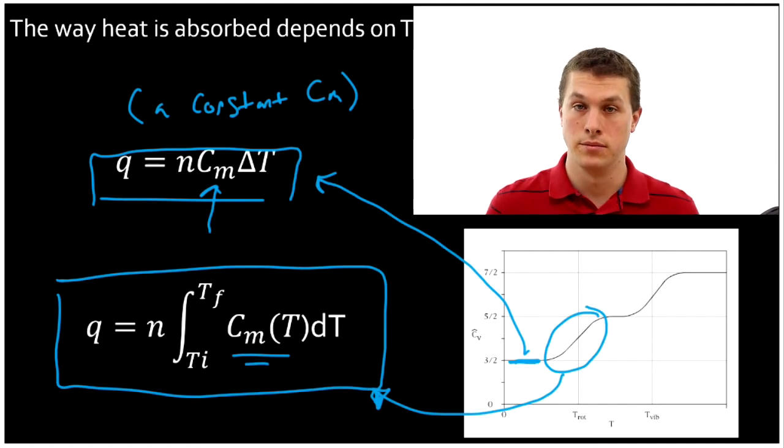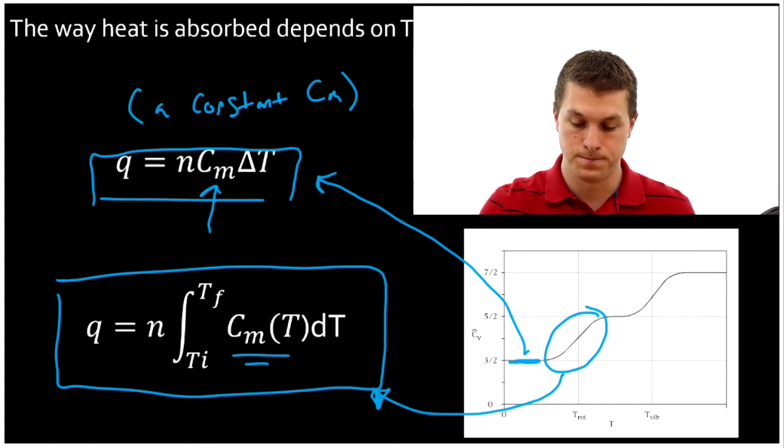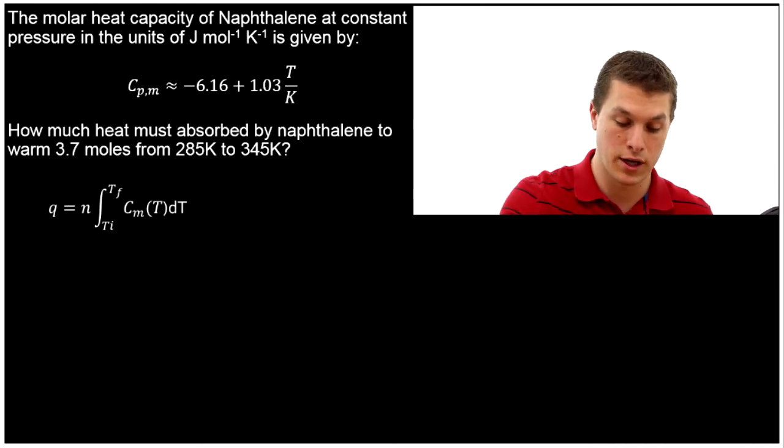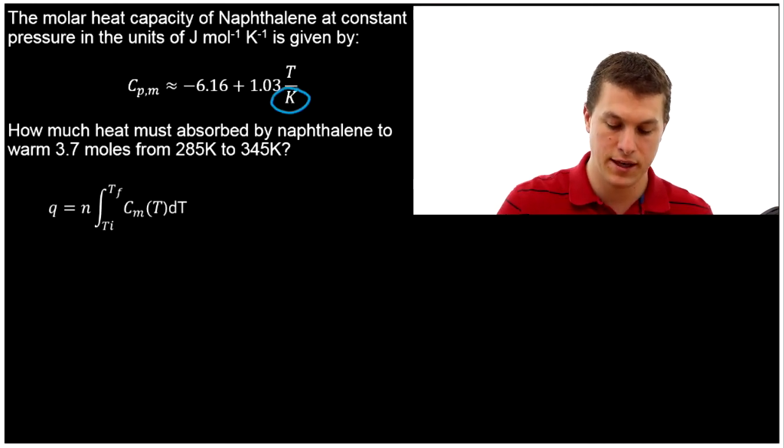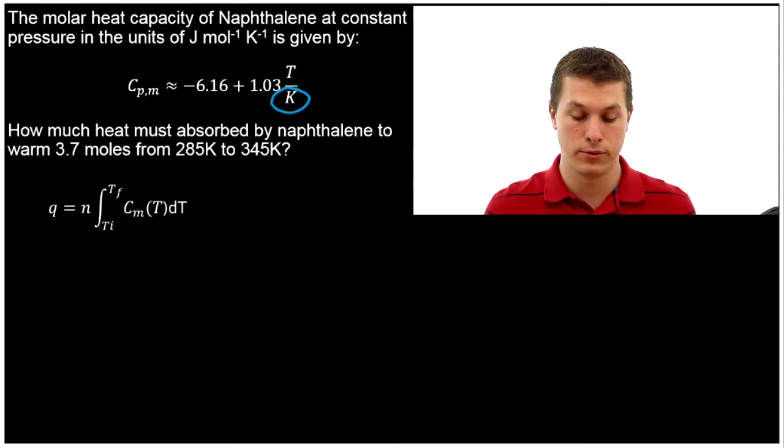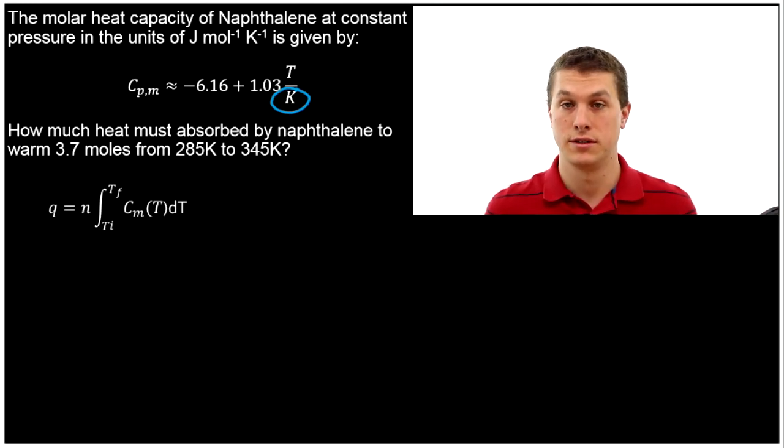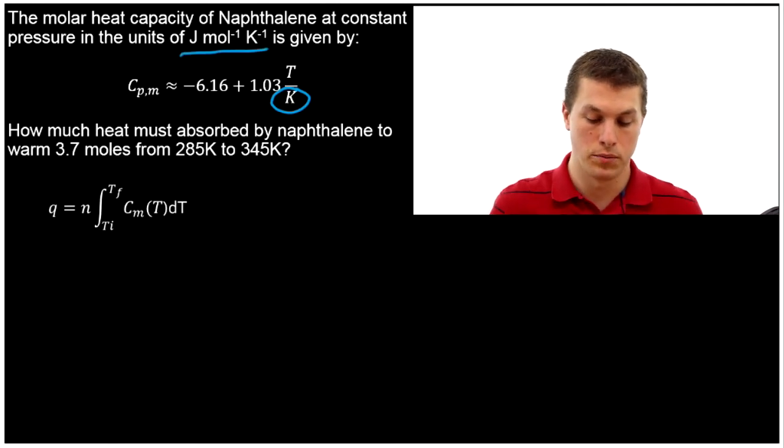Let's take a look at a problem that uses calculus to solve heat capacity. This problem says the molar heat capacity of naphthalene (that's two benzene rings fused together) at constant pressure, in the units of joules per mole per kelvin is given by Cp,m = -6.16 + 1.03T/K. A couple notes here. This over K thing is just to get the units right. Really we're just multiplying by T. So you could write that without the K. The point of the K being there is just to remind you we're dividing by units of Kelvin there to make our Cp,m have the correct units, ultimately joules per mole per kelvin.